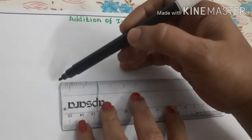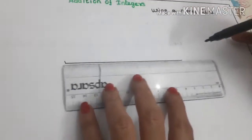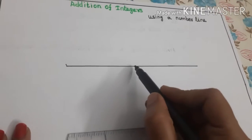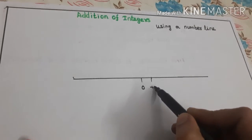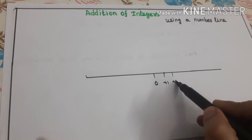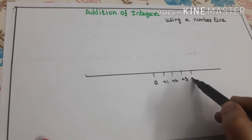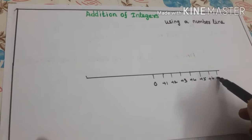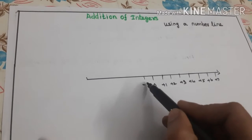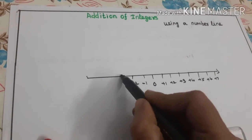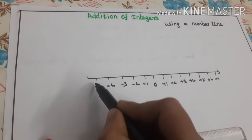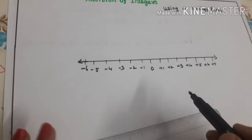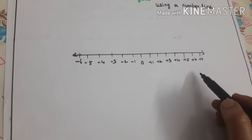Draw a number line. In this number line, it contains positive integers and negative integers along with 0.